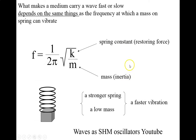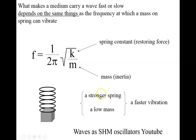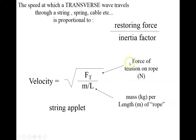The greater the frequency, the faster that wave is going to transmit. Frequency equals one over two pi times the square root of k over m. We've got a spring constant, which is the restoring force, and we've got mass as the inertia factor. So the bigger the springiness factor, the faster the wave is going to transmit. A stronger spring with low mass is going to have a faster vibration. Keep in mind: the restoring force increases the velocity, and the inertia factor decreases it.